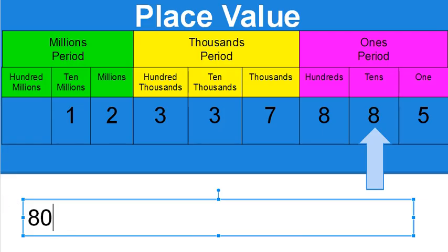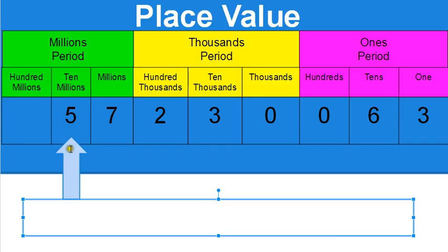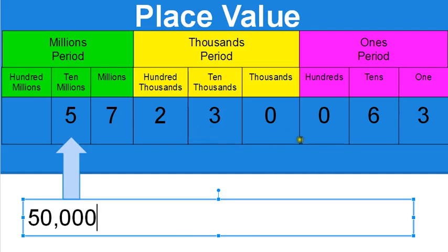The last one is way up here: ones, tens, hundreds, thousands, ten thousands, hundred thousands, millions, and ten millions — the second digit in the millions period, so that's the ten millions place. There's a five in the ten millions place, so I put my five and a zero, that's the end of the millions period, then a comma, three more zeros for the thousands period, a comma, and three more zeros for the ones period. A five in the ten millions place is 50 million.